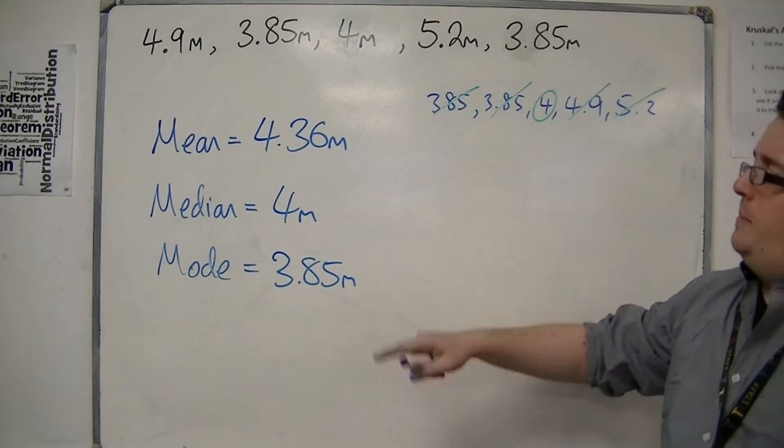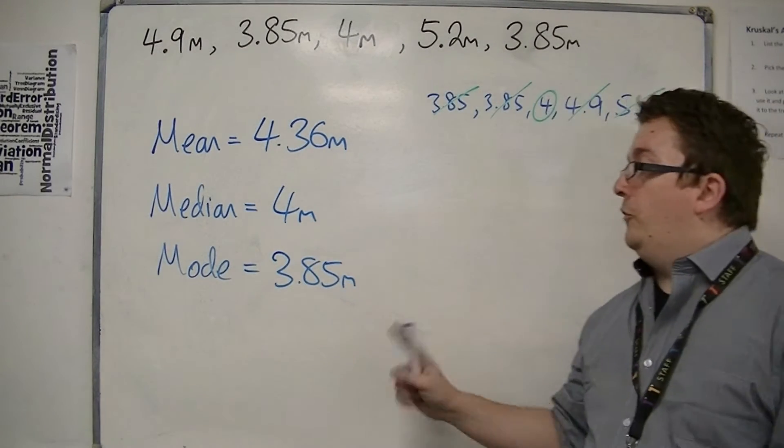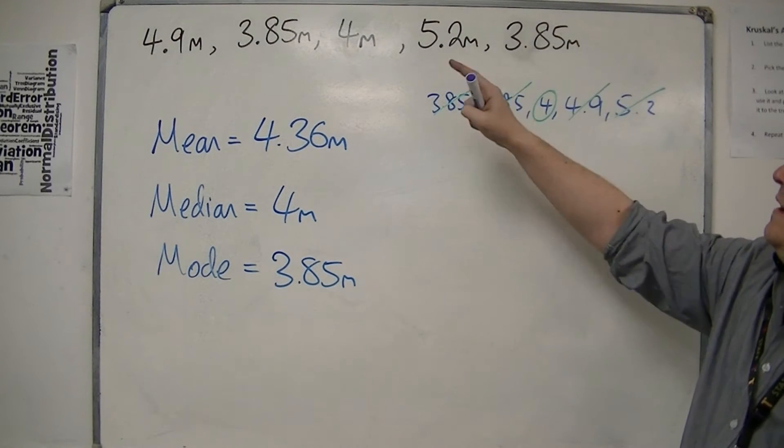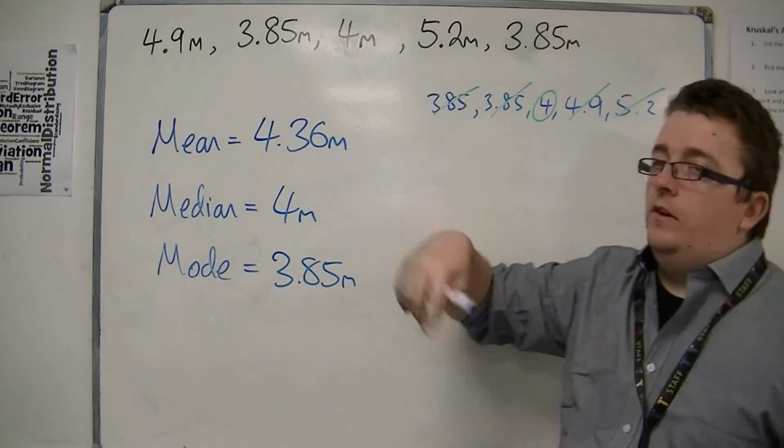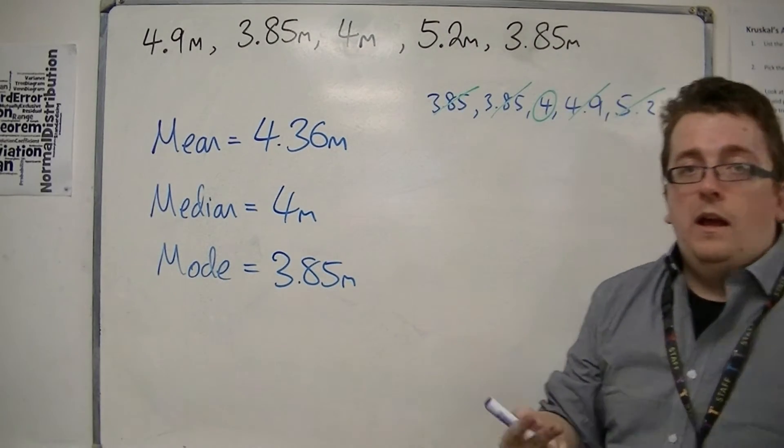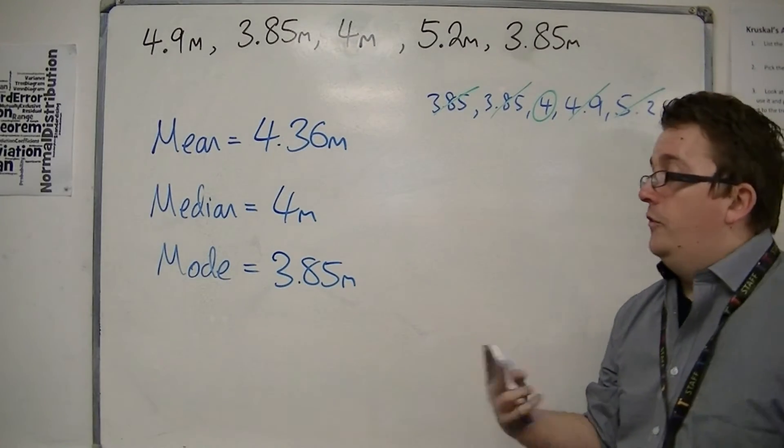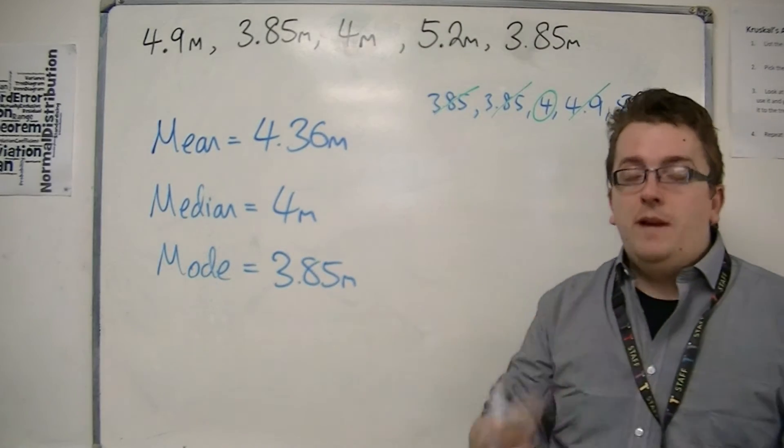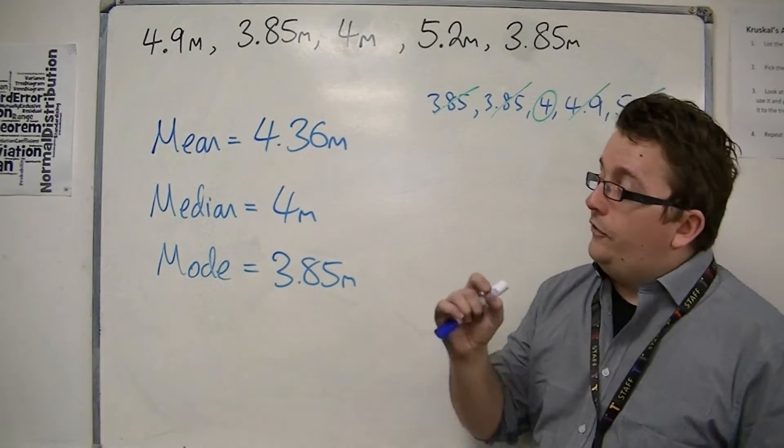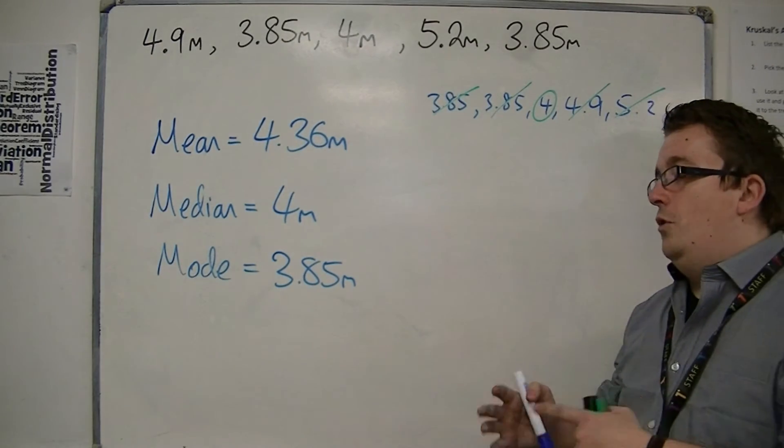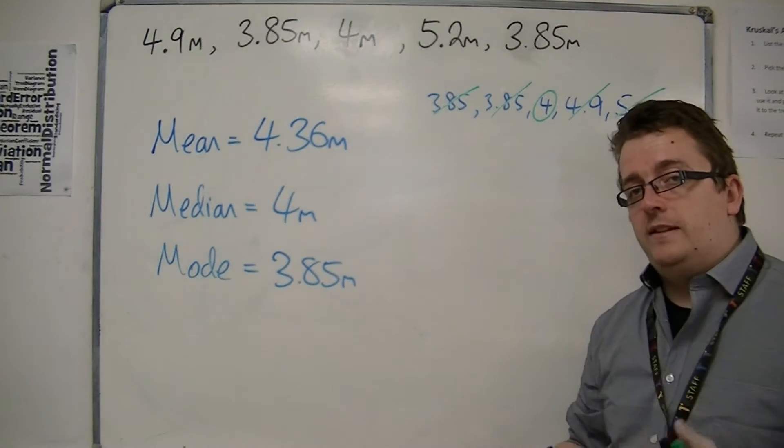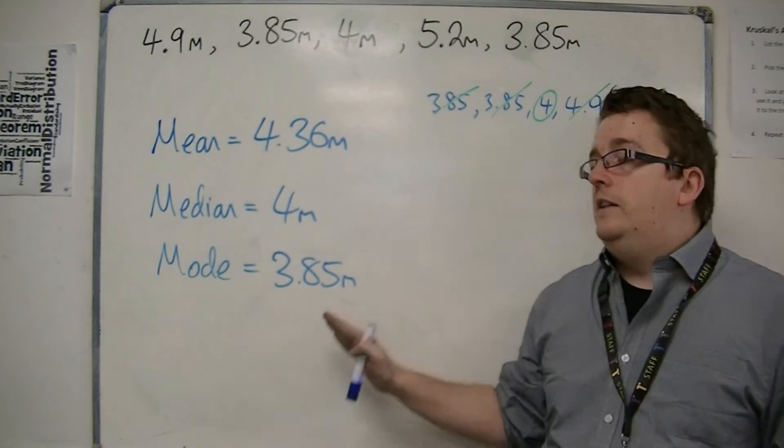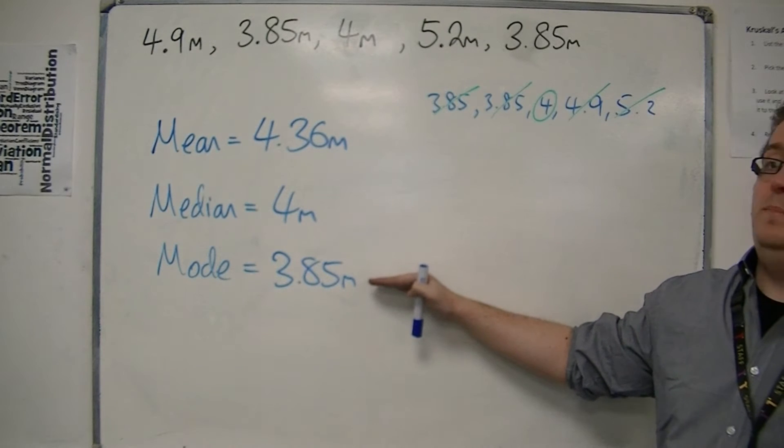Now let's start off with talking about the mode. The mode is 3.85 metres. However, out of our five, only two had repeated numbers. So when we're dealing with the fact that these are the heights of trees, we've measured this to the nearest centimetre, and so what we found here is that really you're working with continuous data. So you could be more accurate. So the likelihood of finding two trees that were exactly the same height would be very slim.